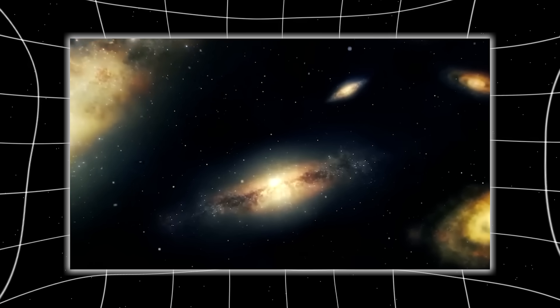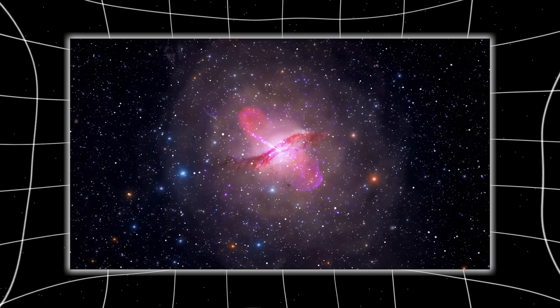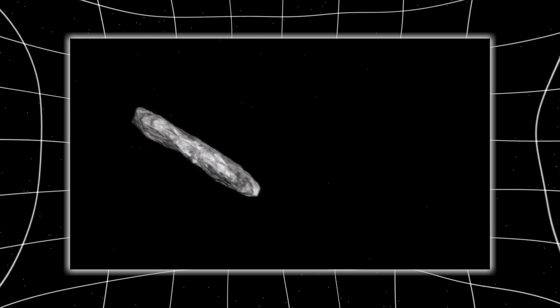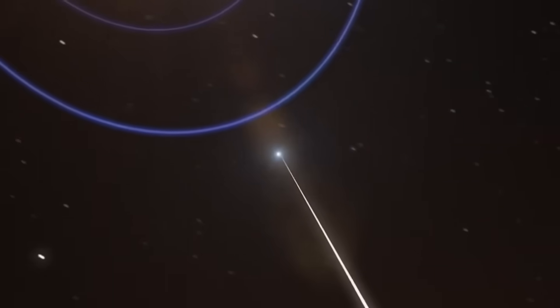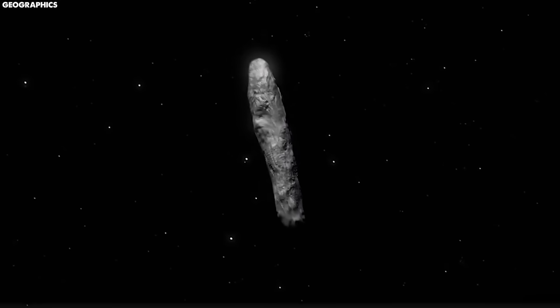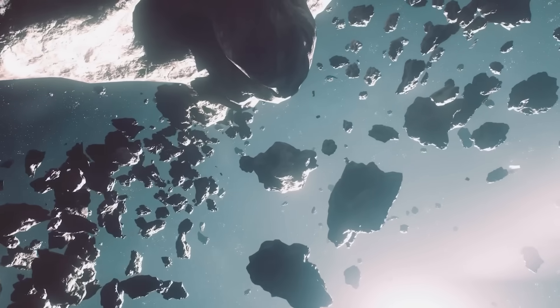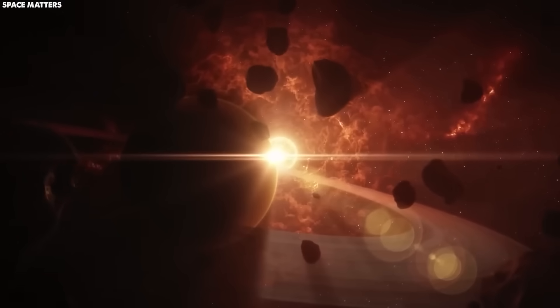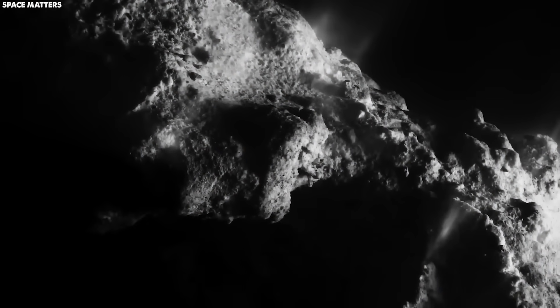That alone placed it among the rarest objects ever discovered, only the third interstellar visitor humanity has ever confirmed after Oumuamua and Borisov. But unlike them, its trajectory was unsettling in its precision. It aligned itself to sweep near the orbits of Jupiter and Mars before slingshotting around the sun, timed perfectly so that Earth would be on the opposite side when it made its closest approach. To some scientists, this was a coincidence. To others, it looked like avoidance.